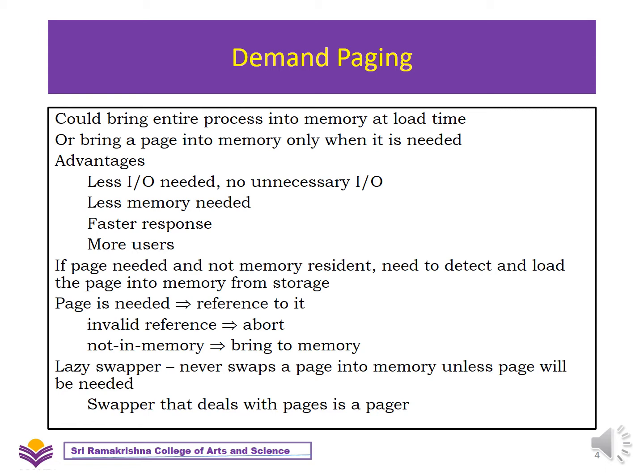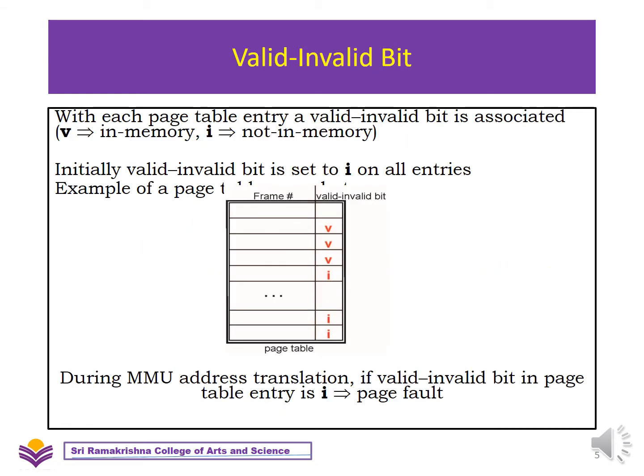A lazy swapper never swaps a page into memory unless the page is needed. The swapper that deals with pages is known as the pager. In the page table, we have two types of bits: valid and invalid. With each page table entry, a valid and invalid bit is associated. If the bit is set as V, that means the page is in memory. If it is set as I, that means the page is not in memory. Initially, the valid and invalid bits are set to I for all entries.